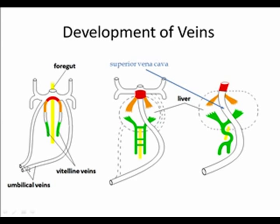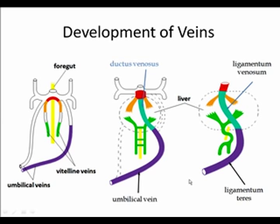The umbilical vein on the right side degenerates due to liver growth, leaving just the left umbilical vein. That continues to the liver, and a new vessel called the ductus venosus forms a bypass allowing maternal blood to go from the umbilical vein through the ductus venosus, bypassing the liver to reach the inferior vena cava. After birth, the umbilical vein degenerates to form the ligamentum teres, and the ductus venosus becomes the ligamentum venosum.